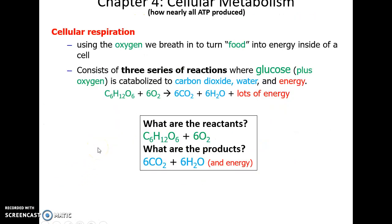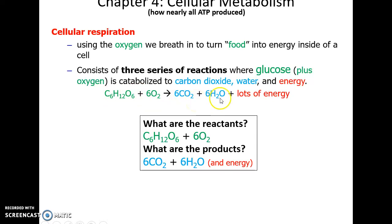Cellular respiration is how we make ATP. We use oxygen to turn food into energy — this is why we breathe. The specific chemical reaction most common is: glucose plus oxygen gets turned into carbon dioxide (which we breathe out), water, and lots and lots of energy.